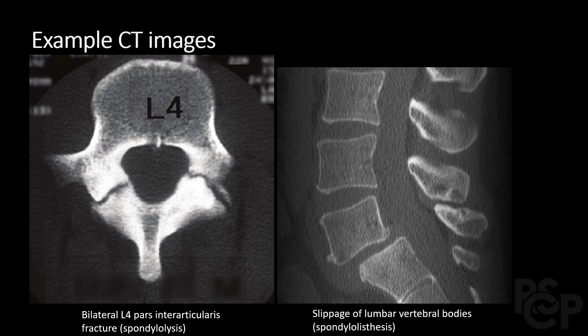Here are some example CT images. On the left we have a case of spondylolysis, as evident by the bilateral pars interarticularis fractures, leading to an unstable fracture. This fracture over time can lead to spondylolisthesis, which is slippage of one vertebral body over another.